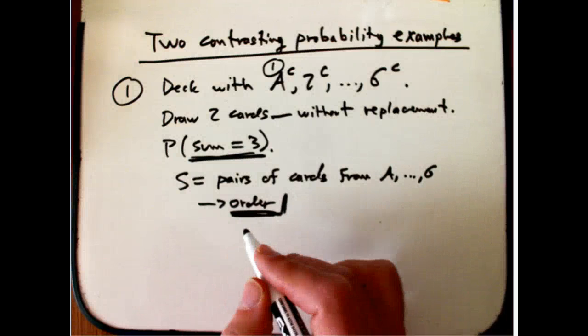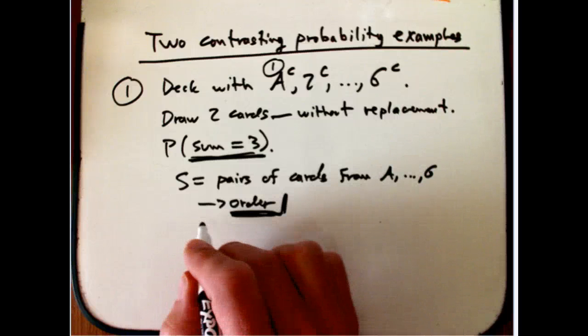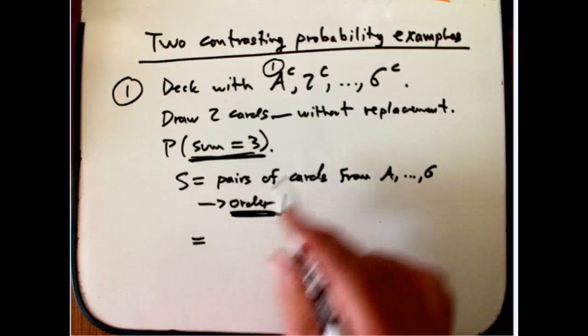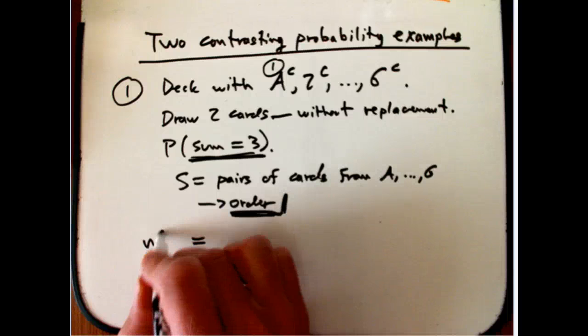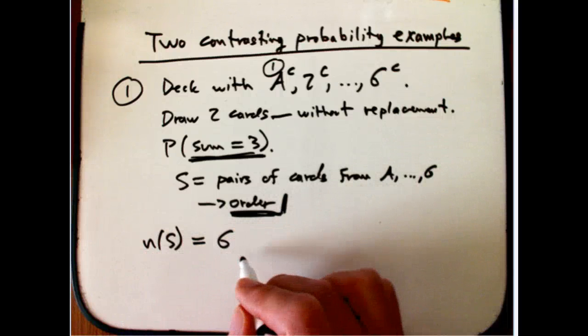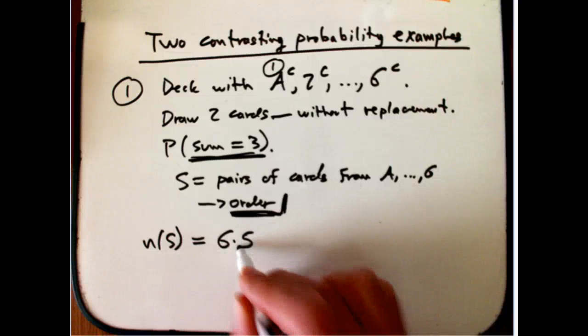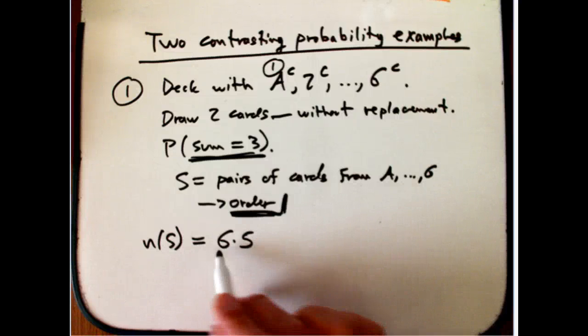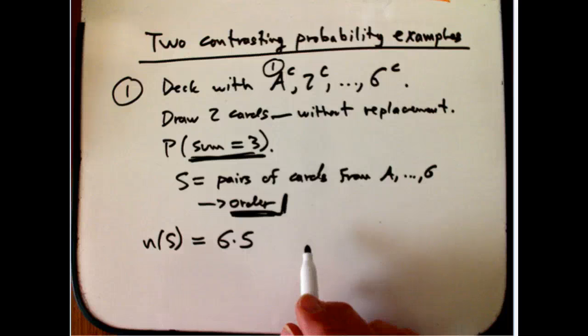So that's just going to be how many choices for the second card. So the number of outcomes in the sample space is how many choices for the first card, which is six times how many choices for the second card, which is five. And I'm ordering them, so I'm not dividing by anything.